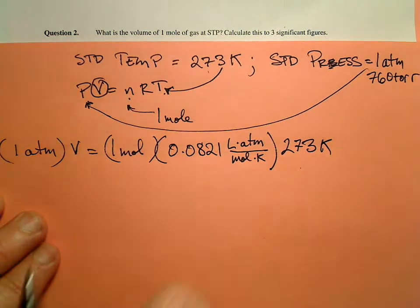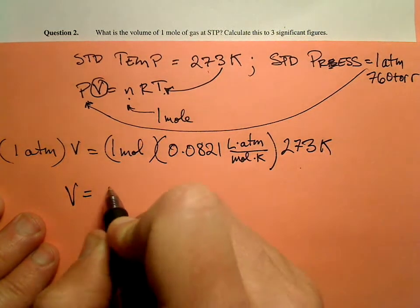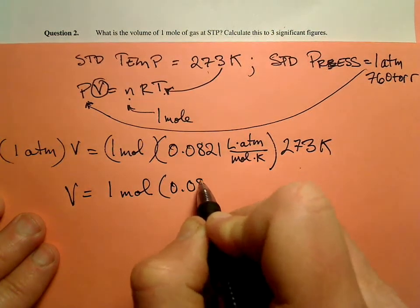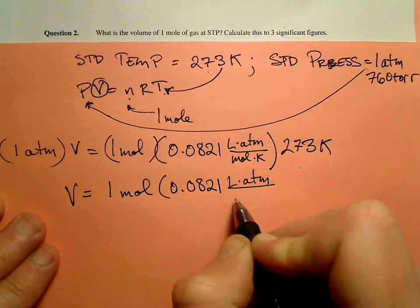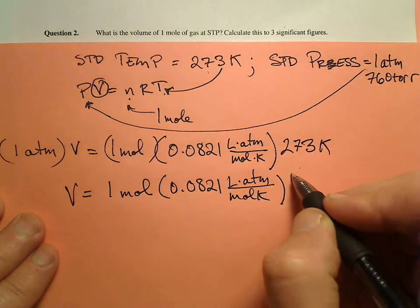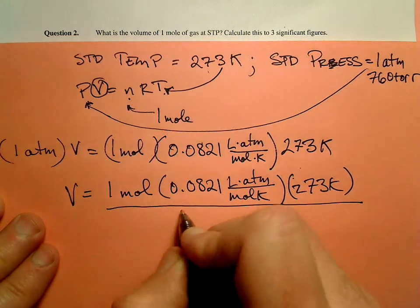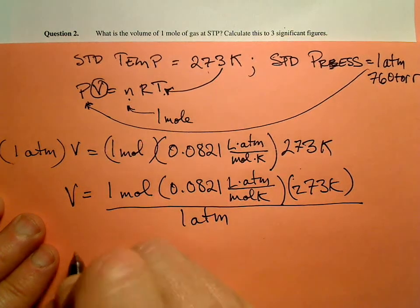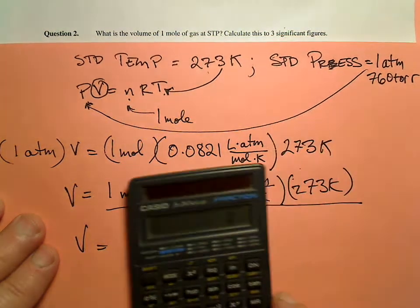So to solve for V, V is equal to 1 mole, 0.0821 liter atmospheres per mole kelvin, times 273 kelvins, all divided by 1 atmosphere. So plug this into our handy-dandy calculator. What do we get?